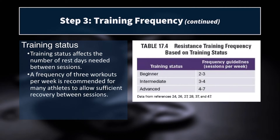The first thing to consider when thinking about training frequency is training status. We talked previously about how to classify an athlete as a beginner, intermediate, or advanced trainee — those are guidelines, not hard and fast rules, but we want to have some knowledge of where the athlete falls. Beginners can get away with training two to three times per week, intermediates can increase that to three to four, and advanced trainees can train up to seven days per week. A beginner could train every day using a body part split, hitting a muscle group and then resting it while training other muscle groups.